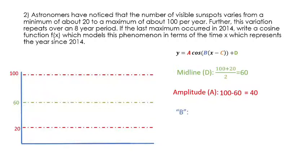Next, let's calculate that B-value. The B-value is calculated from the period, but remember, it's not the same thing as the period. So we have to do 2π divided by the period to get our B-value. And so here that's going to be 2π divided by 8, because they gave us that this phenomenon repeats over an 8-year period. So 2π over 8 is equal to π over 4. And then we have no horizontal shift.